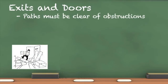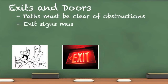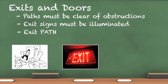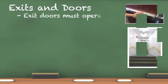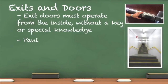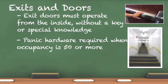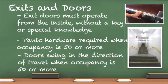All exit paths and doors must be free of all obstructions. Pay attention to the exit signs — they must be illuminated at all times and all bulbs must be working. The exit signs must be clearly visible from a distance. The exit path is required to be illuminated, and emergency lighting must be capable of illuminating when there is no power. The ability to leave an occupancy quickly and safely is crucial. All doors and door hardware must function properly.